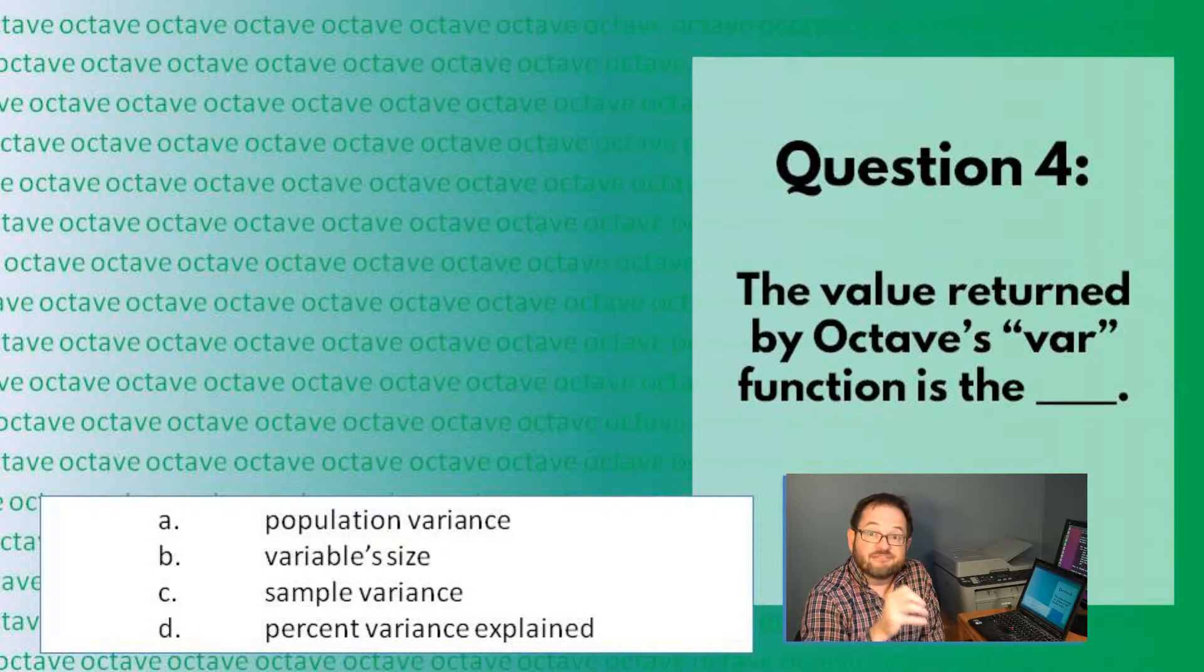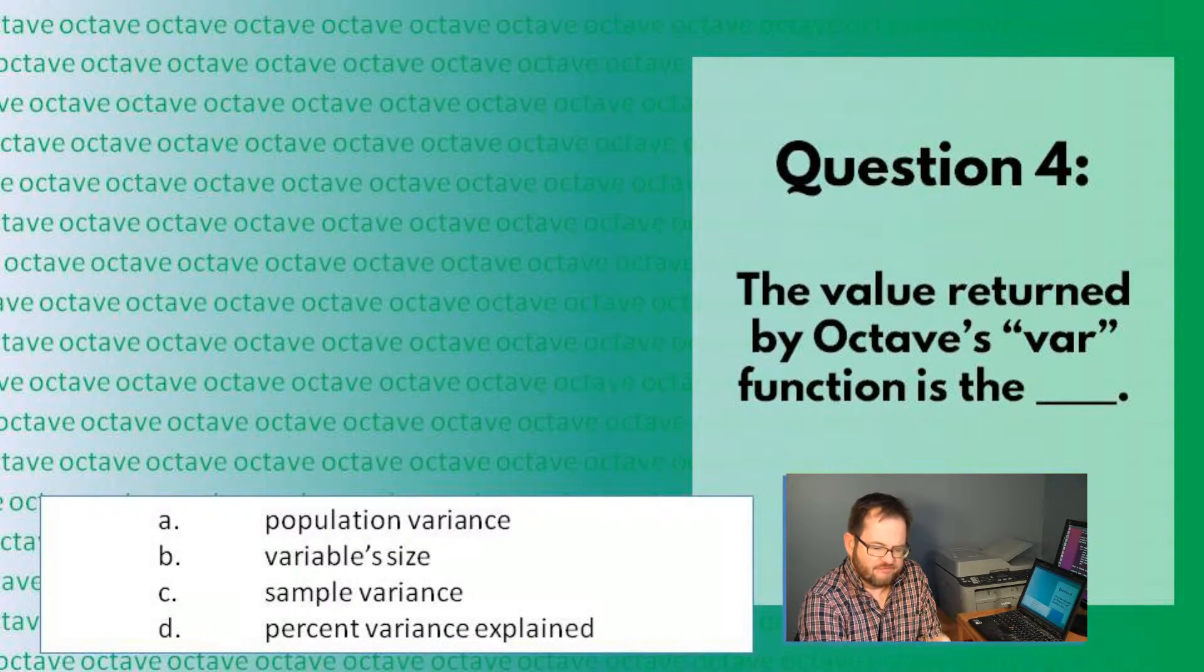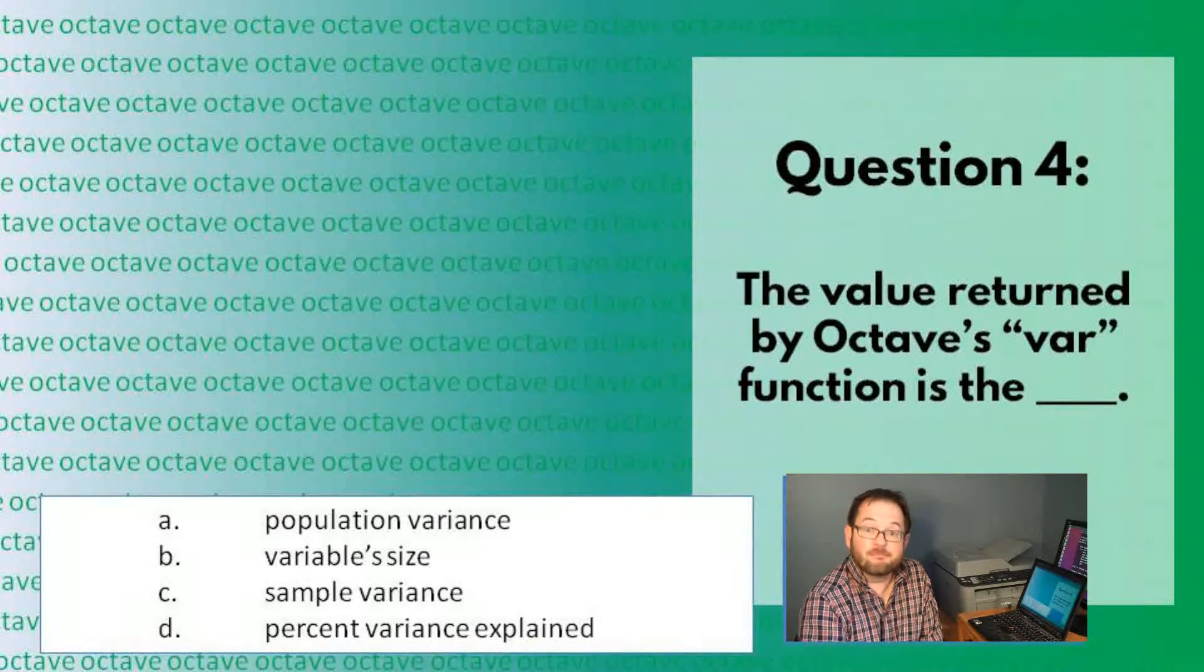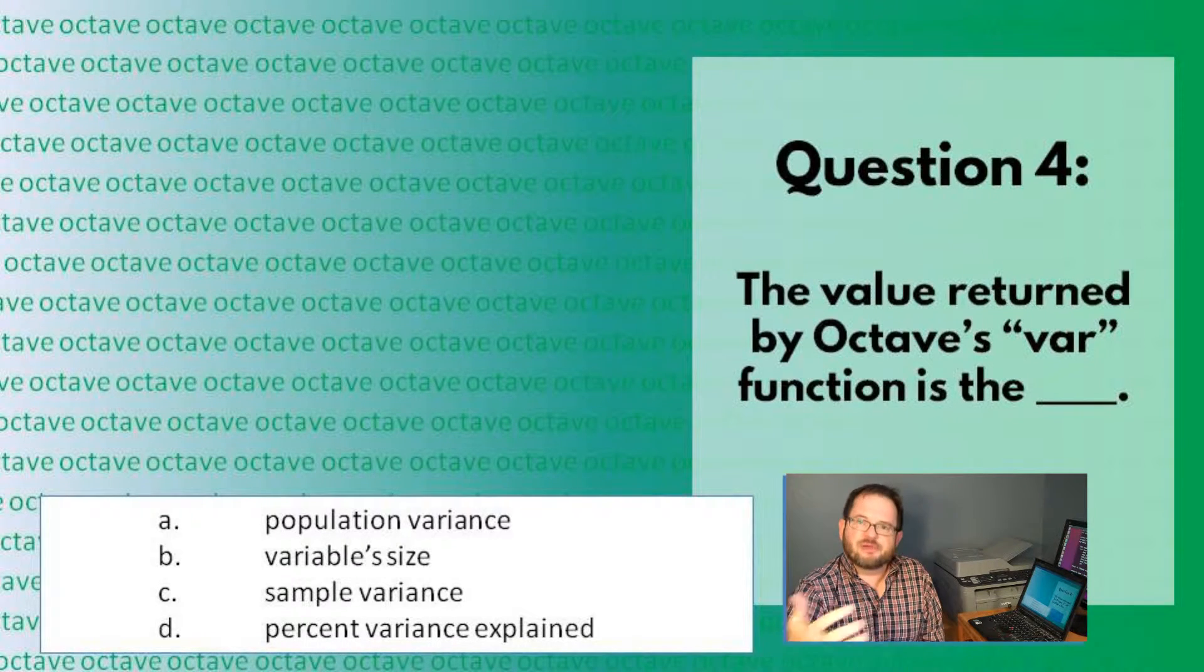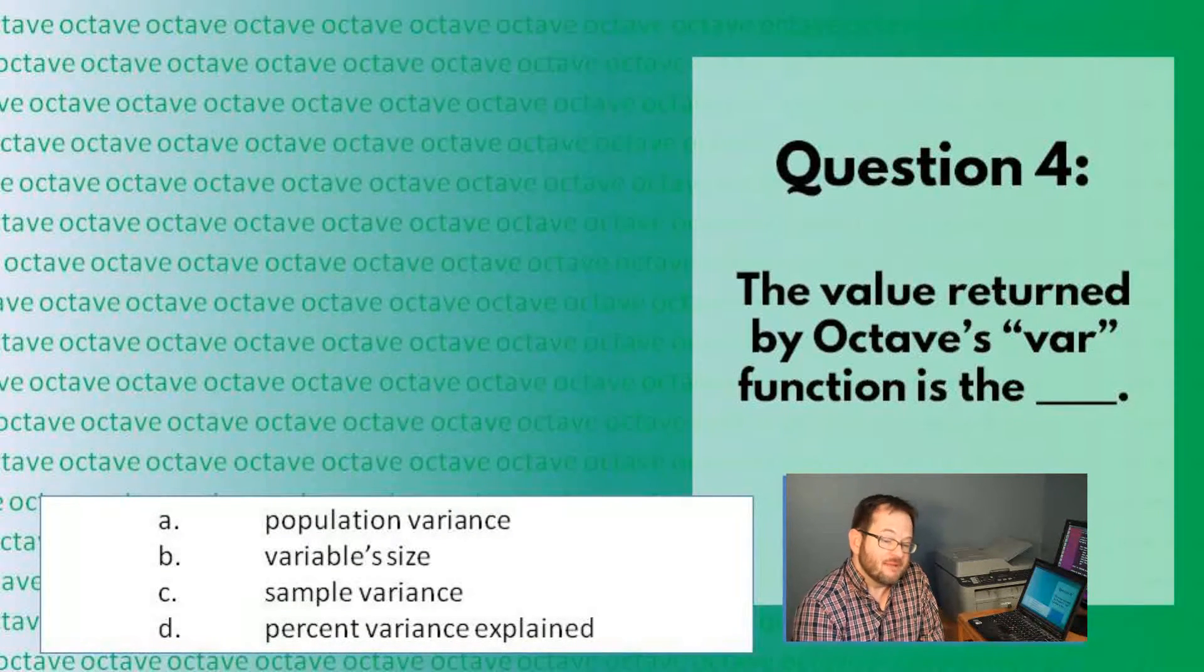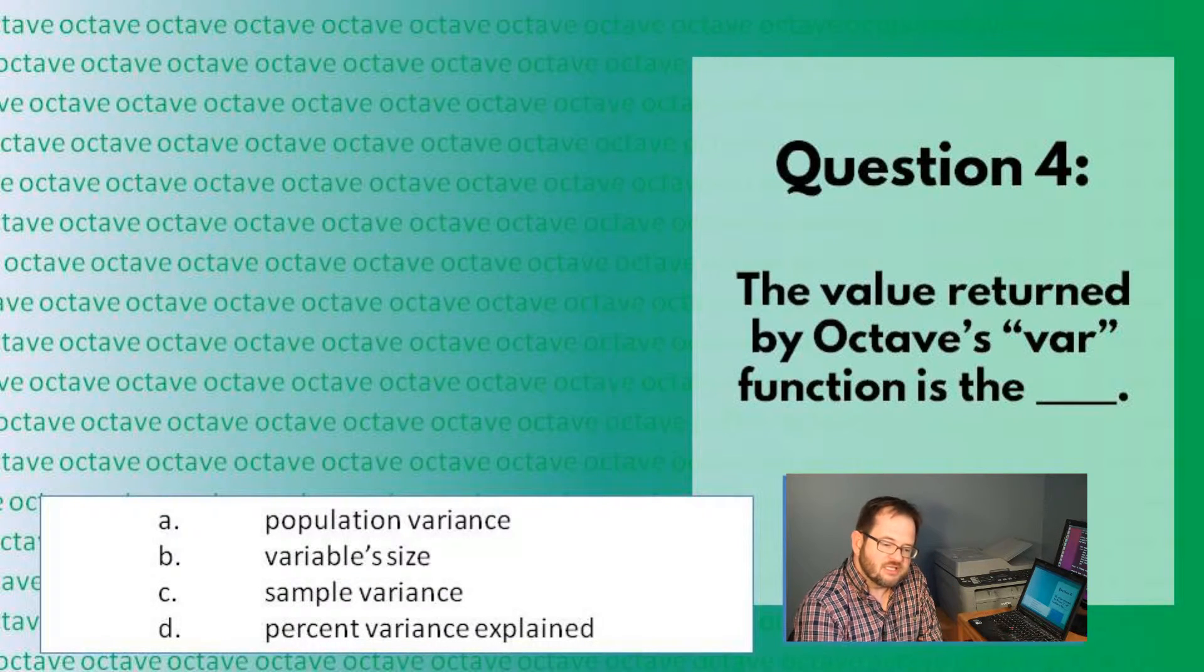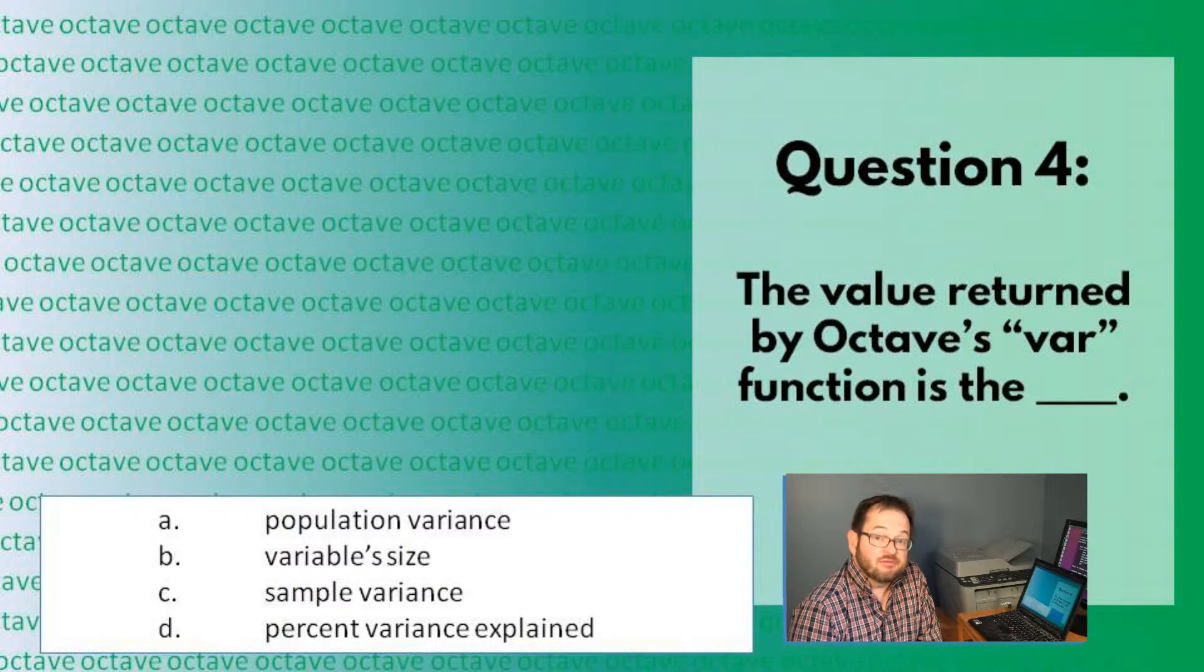It is the variance of the values that are in there, which are a sample of the larger population of possible values that could have been sampled, but they are just the data that you have. So that is a sample variance.